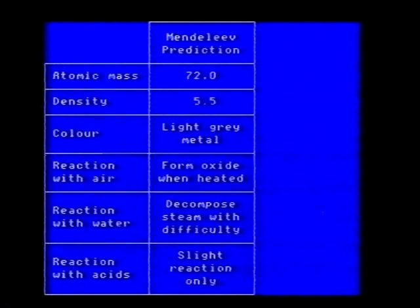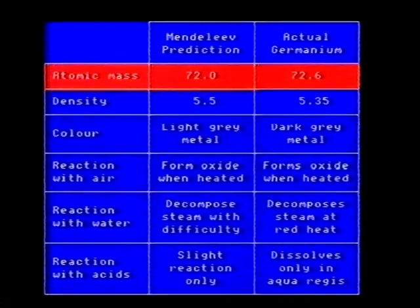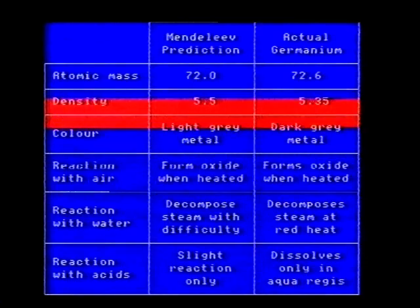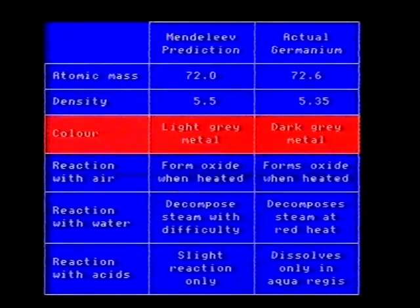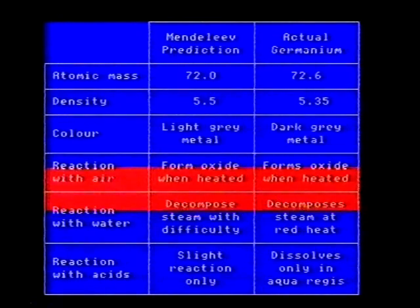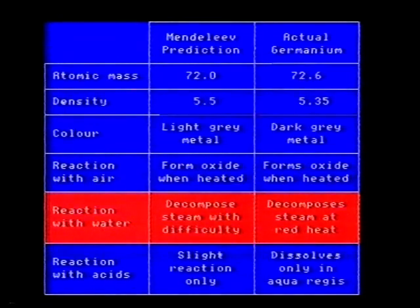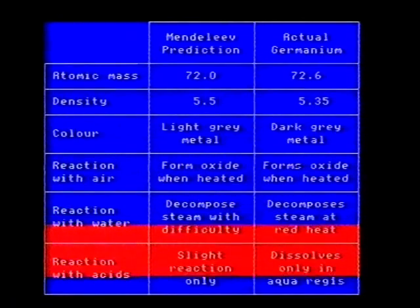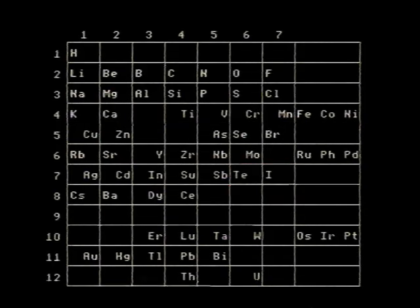His fellow scientists were sceptical. They thought it was just wishful thinking. But then in 1885, germanium was discovered. Germanium exactly fitted the properties predicted by Mendeleev. Mendeleev was completely vindicated in the most dramatic manner possible. Now, nobody had any doubts about the table. Well, no serious doubts.